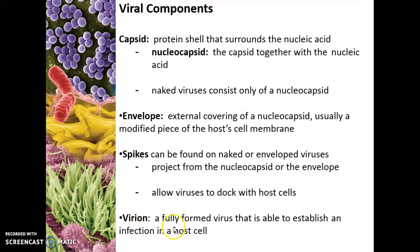It's like the lock-and-key description of a protein and an enzyme — the same scenario with a spike on a virus and a receptor on a host cell. The spike is the key looking for the proper lock to gain entry into the host cell. The term virion refers to a fully formed virus that is able to establish an infection in a host cell — the entire mature particle of the virus. There are five bolded vocabulary words on this slide that you need to be able to define for multiple choice or true-false questions.